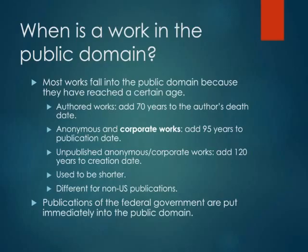If you can't determine the date, you're obligated to assume it was the last possible date on which it could have been created based on circumstantial evidence. Copyright law assumes that if something is unpublished, it should be protected more strongly than if it were published. Copyright terms didn't used to be this long — there are works published in the middle of the 20th century that may be in the public domain, or may be impossible to determine without extensive and expensive research. One major exception is that publications of the United States federal government and its agencies are automatically in the public domain from the moment of creation.